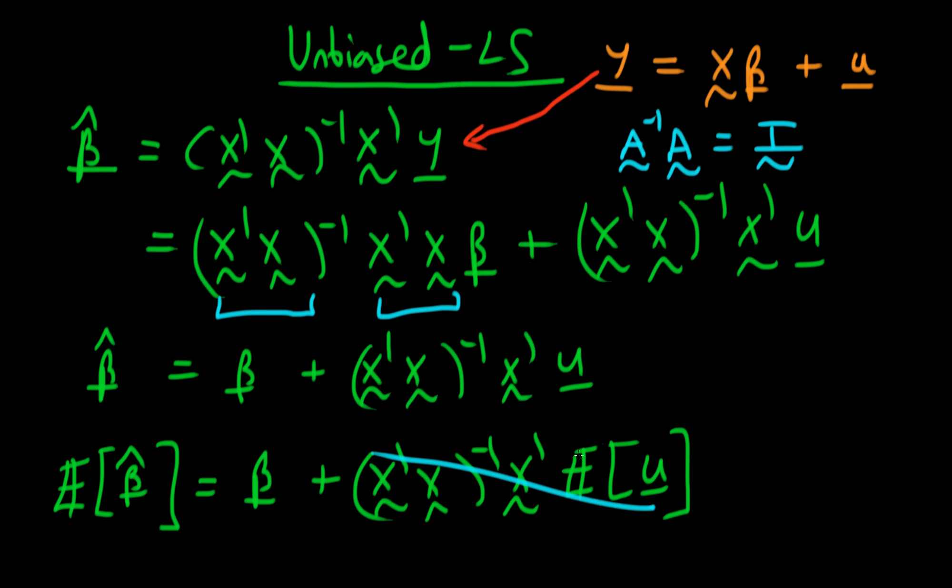So this second term here just disappears and we're left with the expectations of beta hat just equal to the true population parameter beta. So we have proved that under the zero conditional mean of errors assumption that our least squared estimator beta hat is indeed unbiased because the expectations of beta hat is in fact beta.